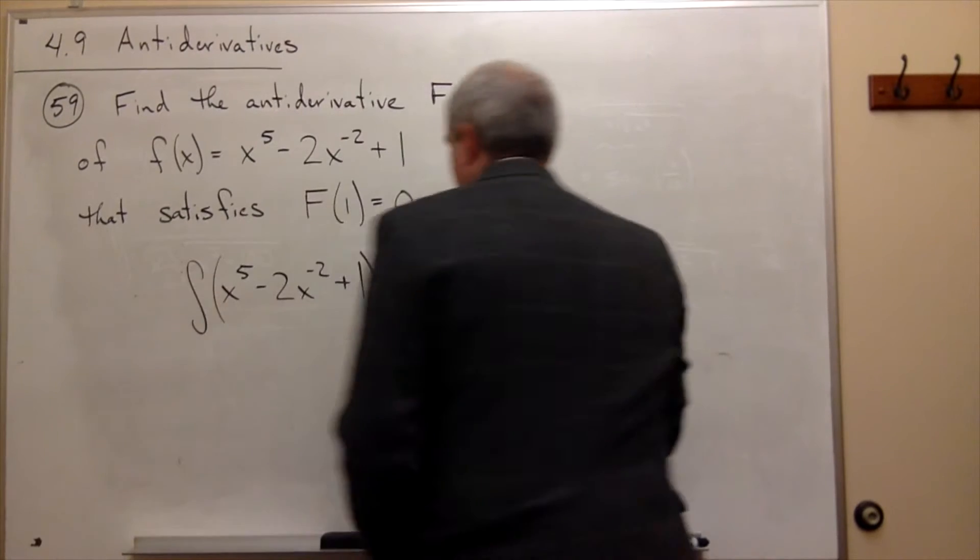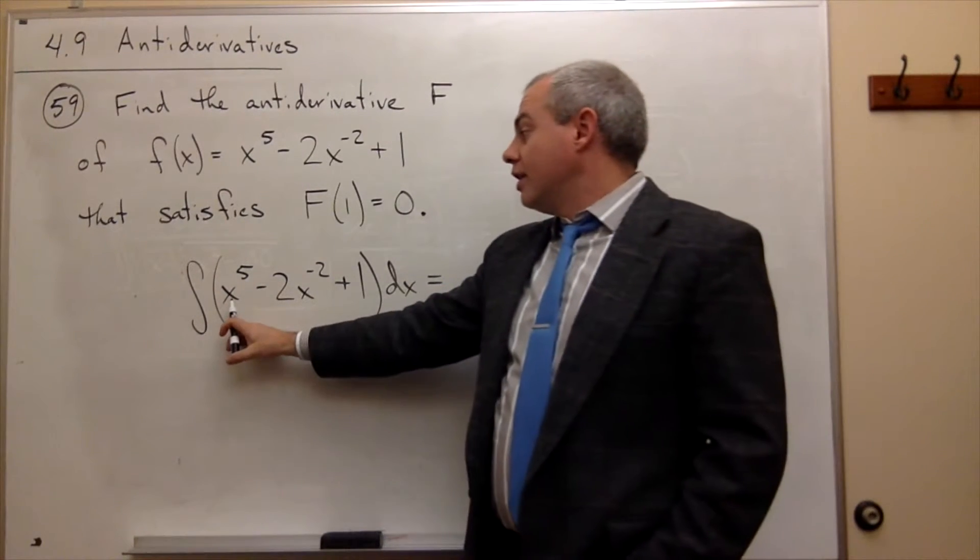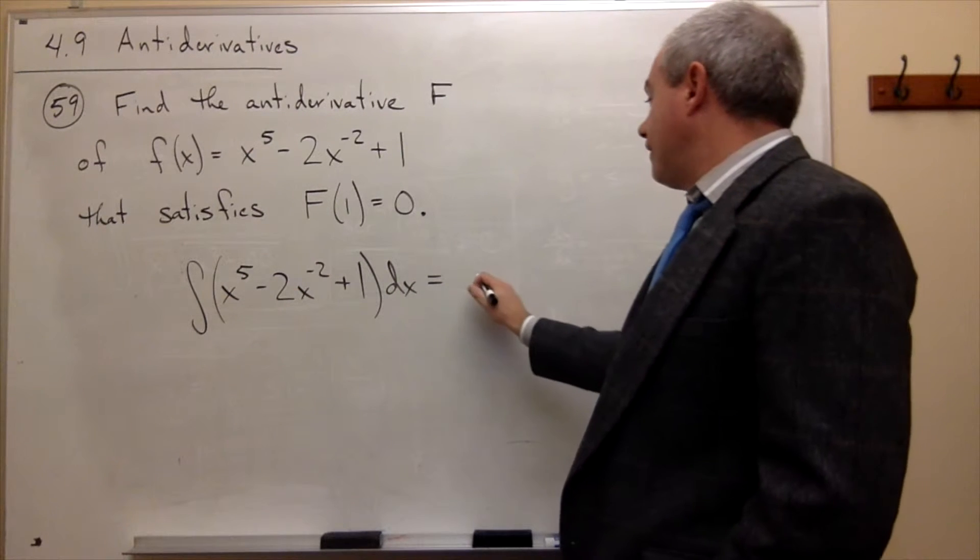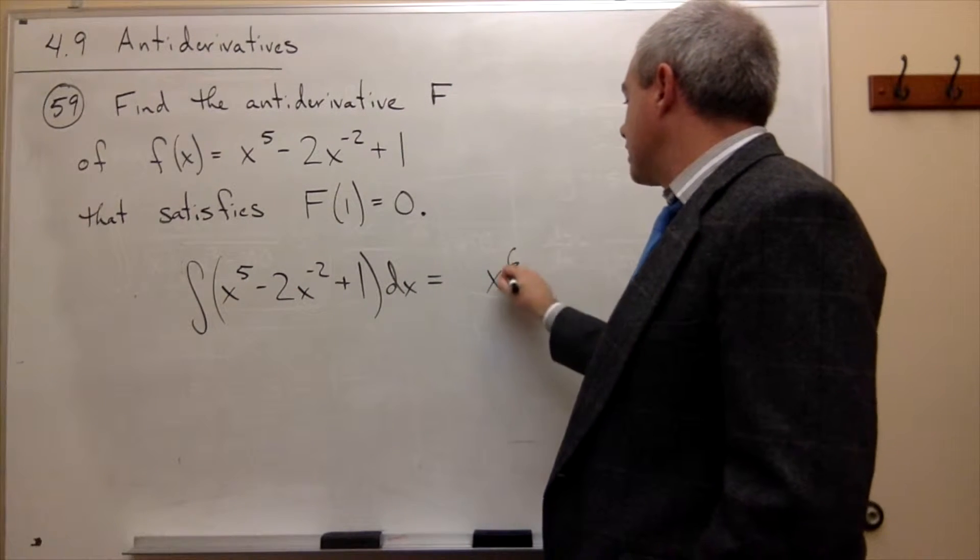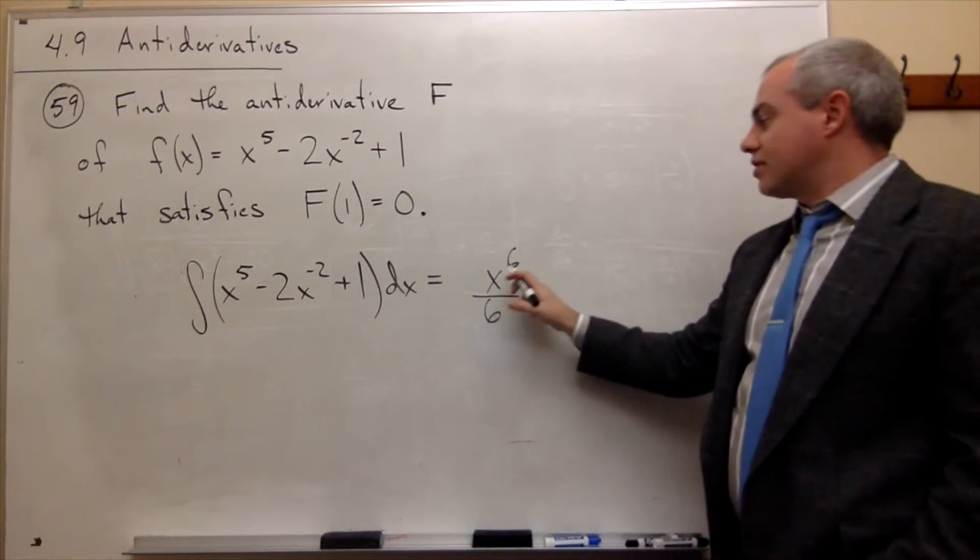I want the anti-derivative of x to the fifth minus 2x to the minus 2 plus 1 dx, which is equal to, using the reverse of the power rule, the anti-derivative of x to the fifth. I add 1 to 5, so I get x to the sixth, but then I divide by the new power, so x to the sixth over 6.